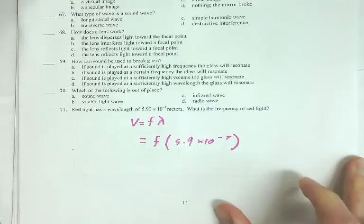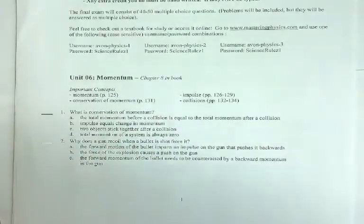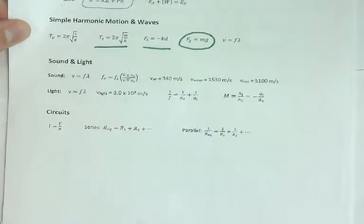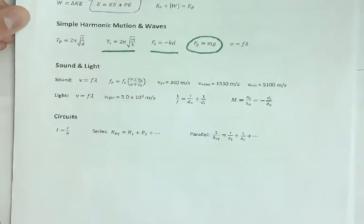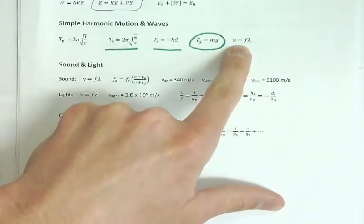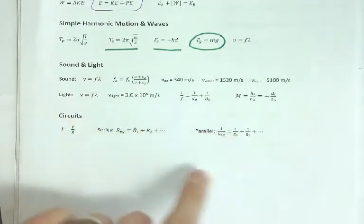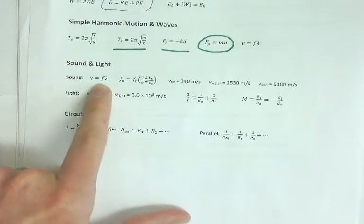So we need to figure out what equation to use. If I go to my equation list and look here in my light and sound section, and waves for that matter too. Here's an equation with frequency and wavelength in it. Here's that same equation down here.